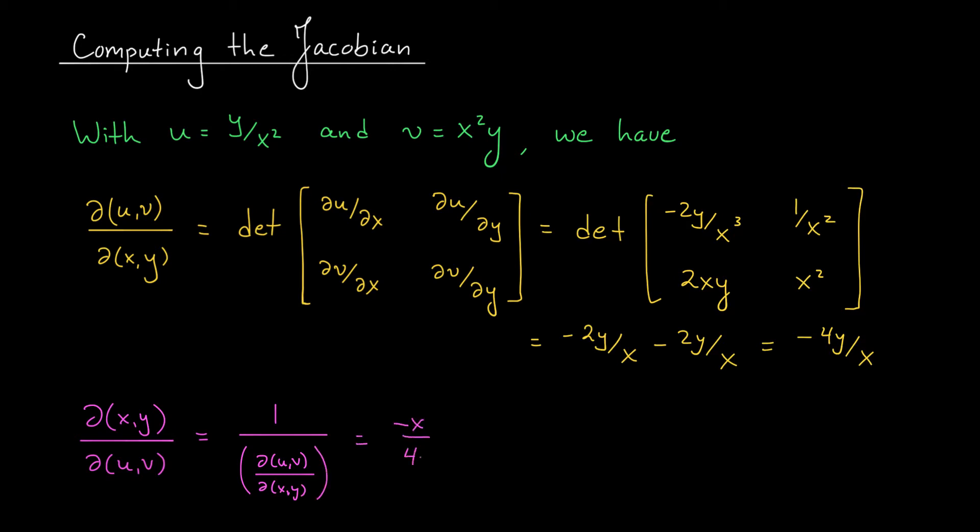Since we know that we're going to need the absolute value of this expression to use in our integral formula, we might as well take it now. Let's think about this. The region r over which we're trying to integrate is located in the first quadrant of r2, right? So both x and y are positive. And hence this expression, minus x over 4y, is negative. So when I take the absolute value of partial xy over partial uv, that's the absolute value of minus x over 4y. That's simply x over 4y.